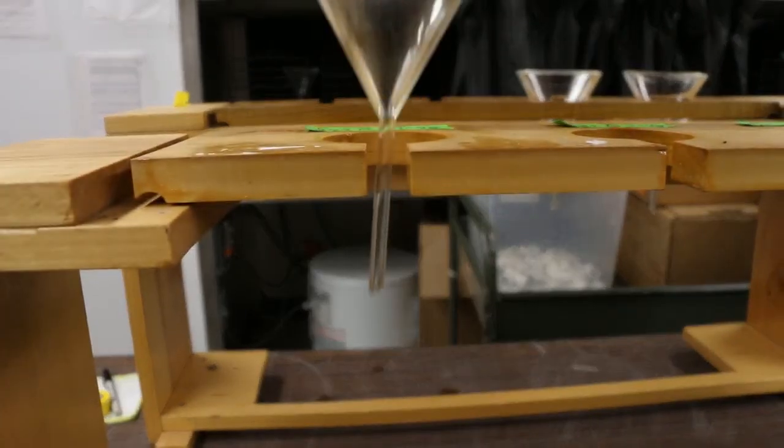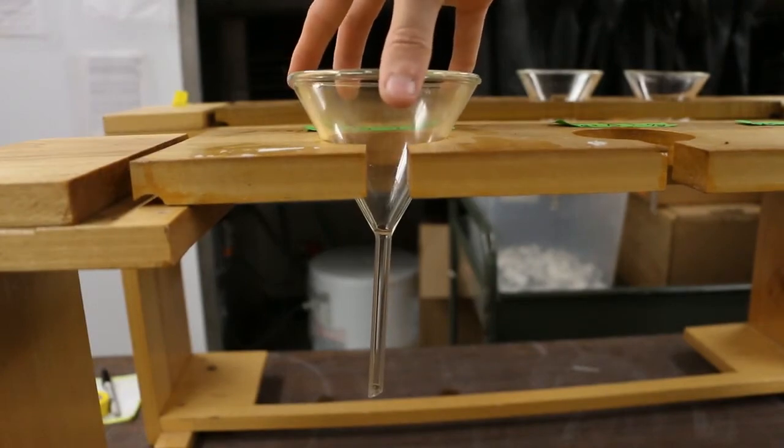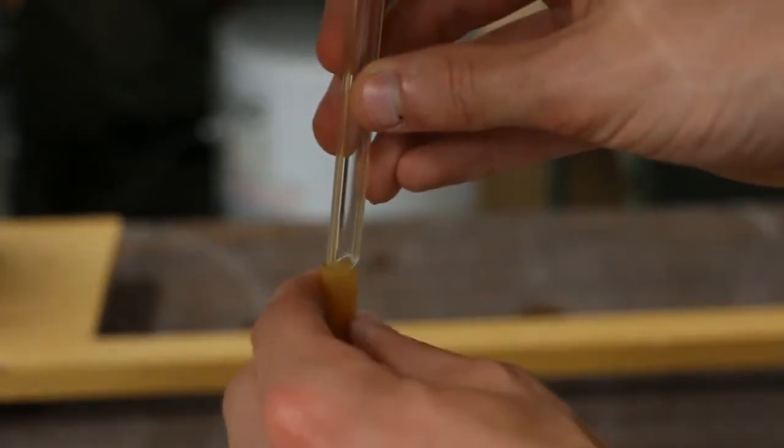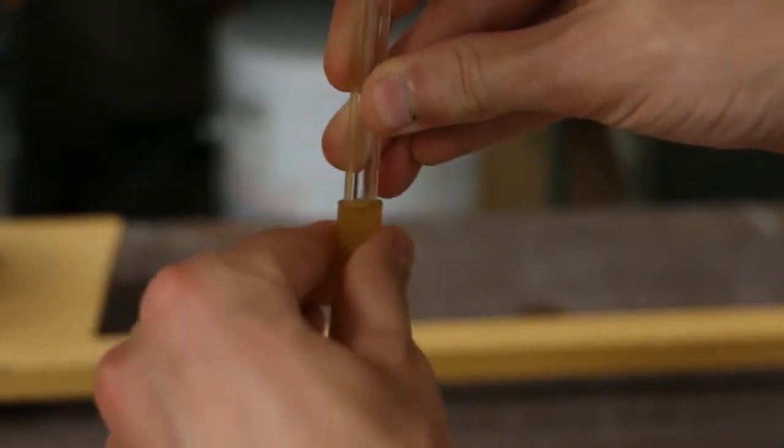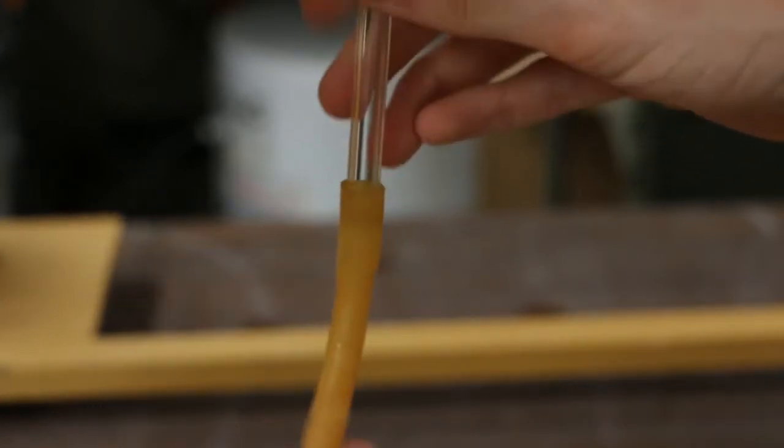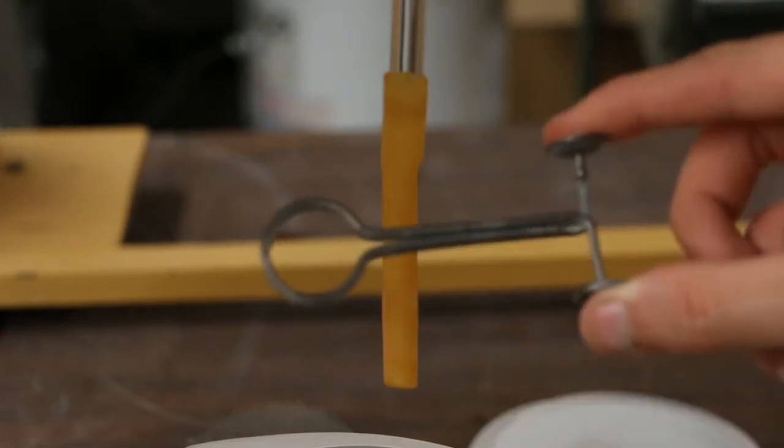Begin with the funnel. Attach the rubber tube to the mouth of the funnel and clamp it shut. Once the trap is filled with water and the nematodes crawl through the filter paper, they'll sink to the bottom, and this is where you'll collect them later.